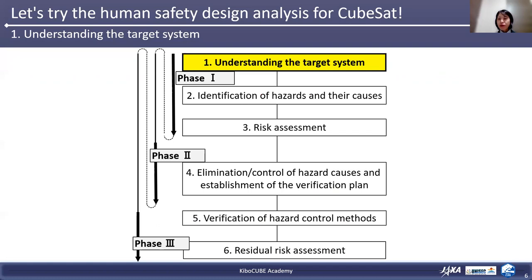The third step: you need to assess the risk by combining the level of damage and the likelihood of occurrence. The fourth step: hazard causes should be eliminated as much as possible. If hazard causes cannot be removed, they should be controlled. In addition, a verification method for hazard control should be established. These steps should be completed by the time the satellite design is completed.